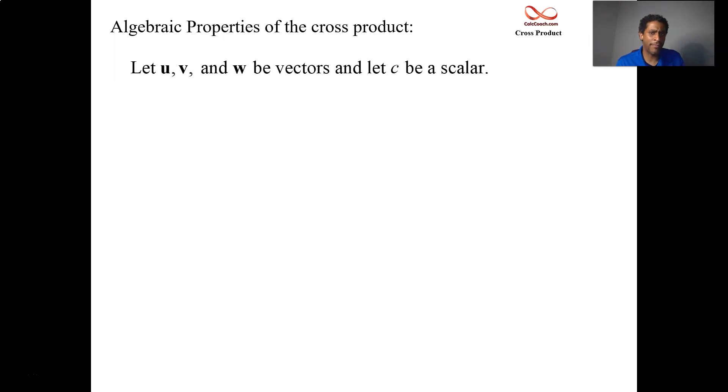First up, number one property is that if you take the cross product in the opposite order, you'll get not the same vector. You'll get a vector that is pointing in the opposite direction. u cross v is equal to the opposite of v cross u. It is not commutative like the dot product was. We'll get to see this in action with some actual vectors and with the right-hand rule.